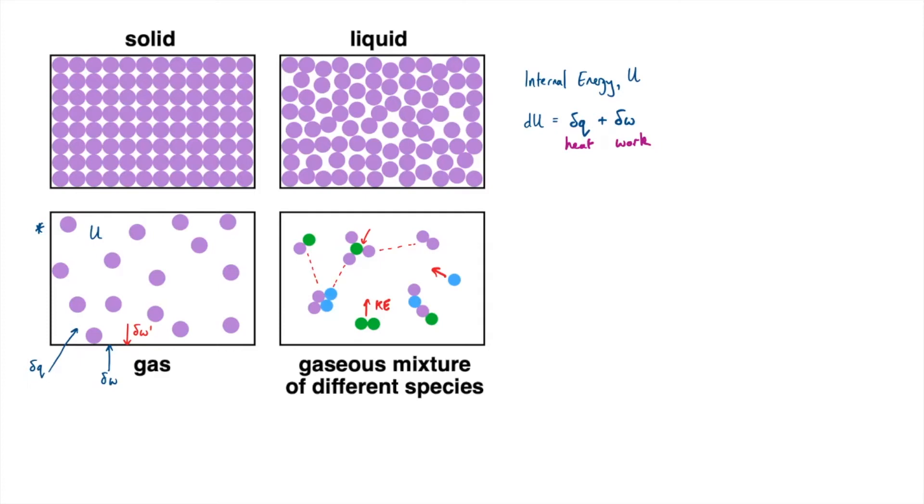So if I want to think about dU for our system, that's going to be equal to, well, if I put in a small amount of heat that will increase its hotness, so that will be a positive change. Whereas if I do some work from external to the system on the system, the gas will respond by doing work in the opposite direction. Now let's consider the case where the only thing that changes is pure mechanical work, so there's no changes in charges. This is so-called PV work only.